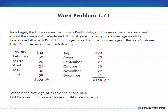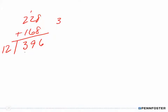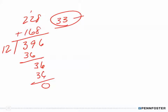Working through the calculation on a new slide: $228 + $168. 8 + 8 is 16, carry the 1, that gives $396 total. Dividing $396 by 12: 12 goes into 39 three times, that's 36, bring down the 6, 12 goes into 36 three times. So $33 is the average monthly phone bill this year.